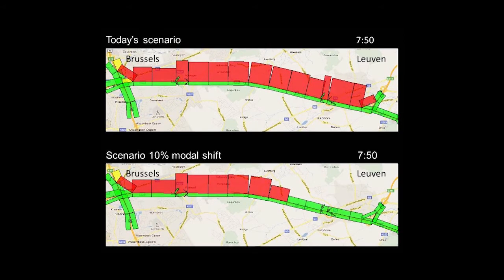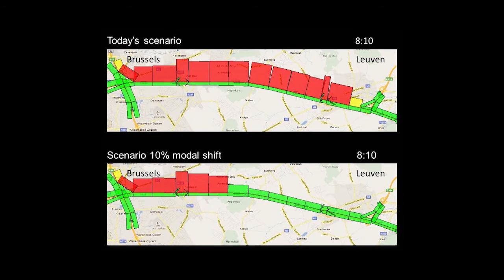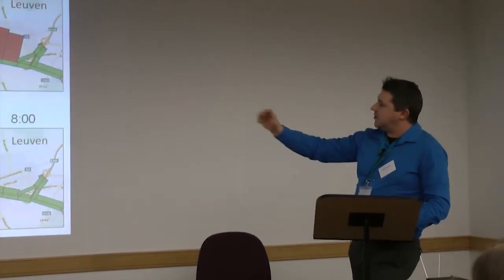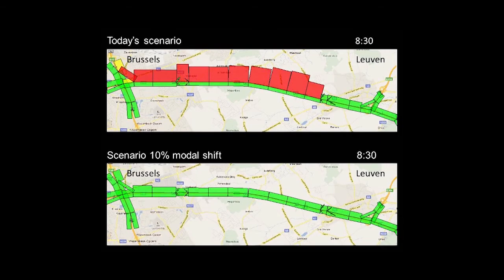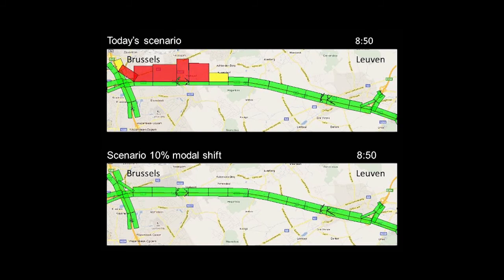Going on until 8 o'clock, we are really in trouble and losing a lot of time. Then as from 8 o'clock, in the actual situation the traffic jam is still there, but in the modal shift situation it is already progressing and starting to disappear. By 8:30, which is an interesting moment, we have no more traffic jam at all, while in the actual situation there is still a problem that continues until after 9 o'clock.